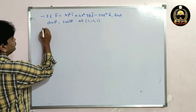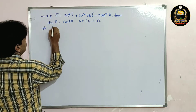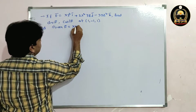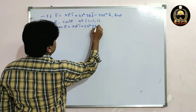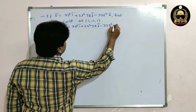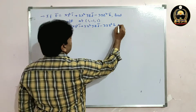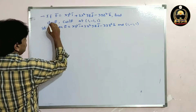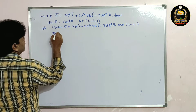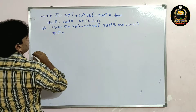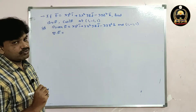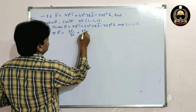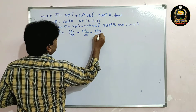Solution. Given f̄ = xy²ī + 2x²yzj̄ - 3yz²k̄, and the given point is (1, -1, 1). Now div f̄ can be written as del dot f̄. There is only one formula: del dot f̄ = ∂f1/∂x + ∂f2/∂y + ∂f3/∂z.